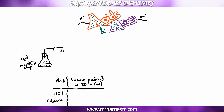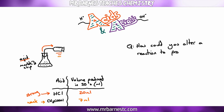Consider a reaction where hydrochloric acid or ethanoic acid reacts with marble chips, measuring the volume of gas produced in 30 seconds. Hydrochloric acid (strong) produces 20 ml of gas in 30 seconds, but ethanoic acid (weak) only produces 7 ml. The question then asks how you could alter the reaction to produce the same volume of gas.